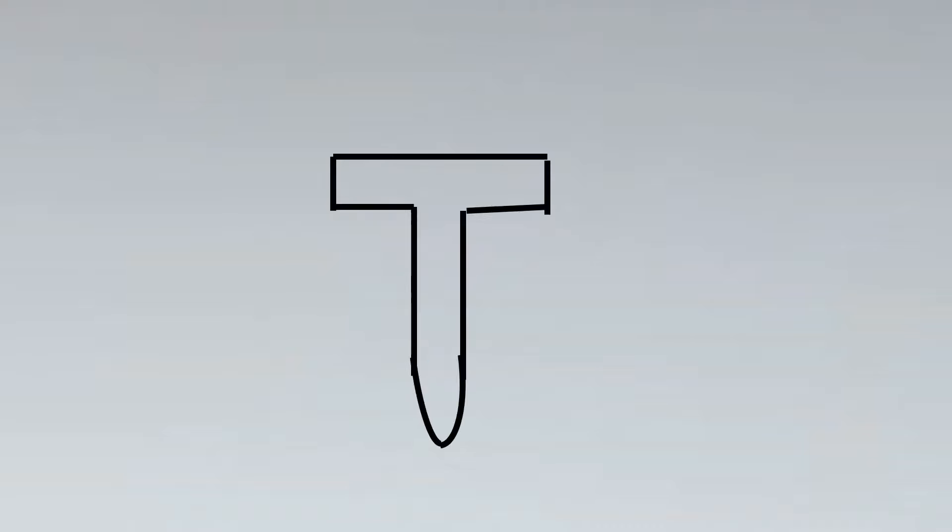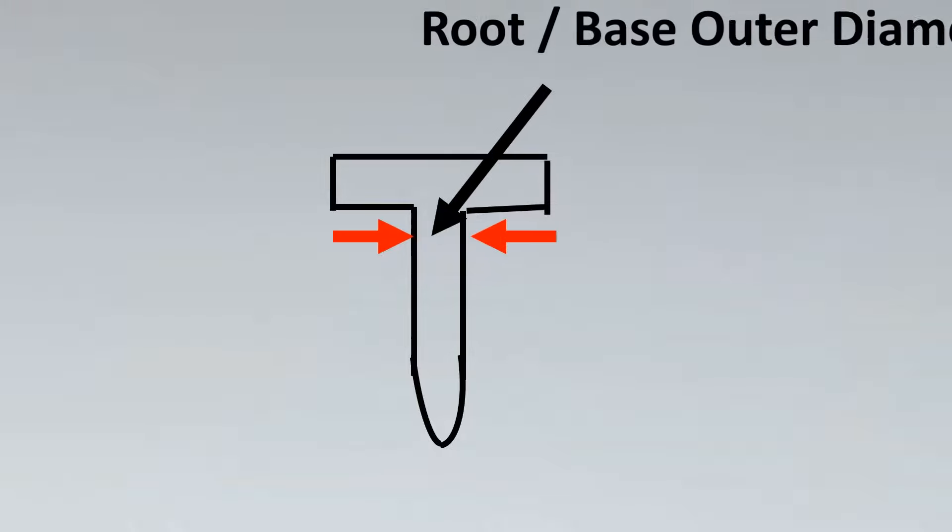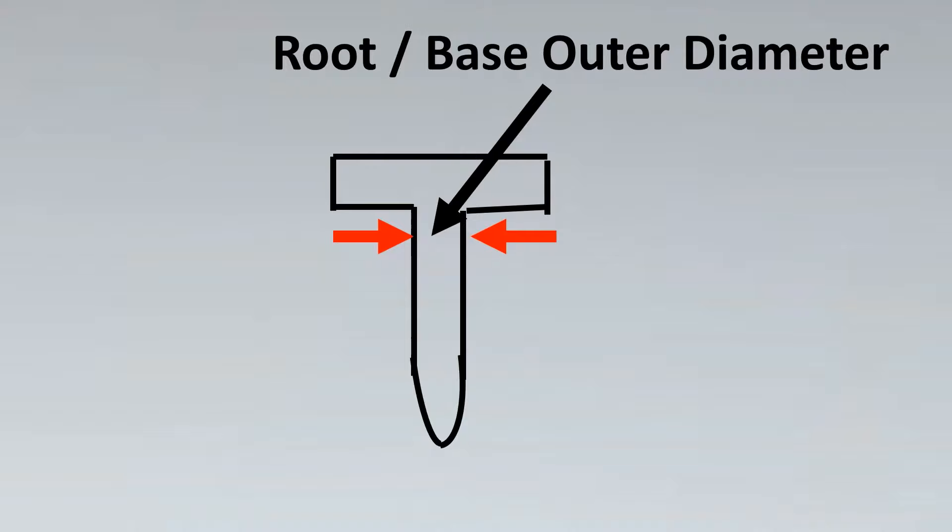So the first thing in taper ratio that we need to know is these two lengths. These are the basis of taper ratio. The first length is basically called as your root or base outer diameter and the next length, which is called as your tip outer diameter. So these two are the most important parameters in taper ratio.